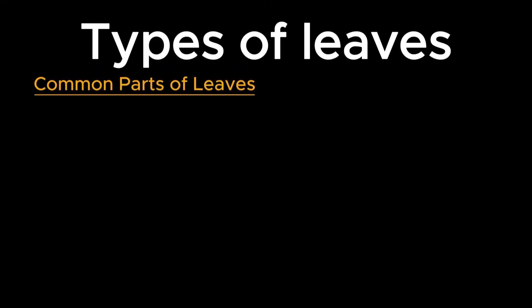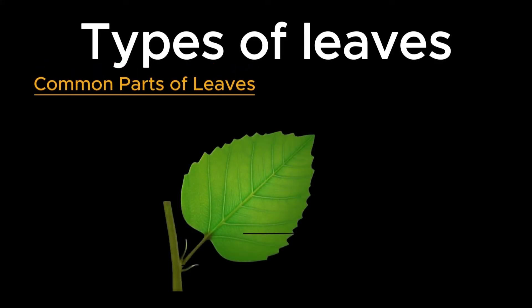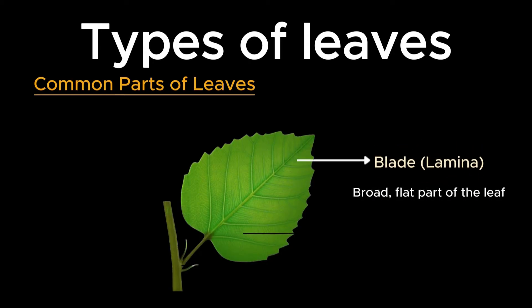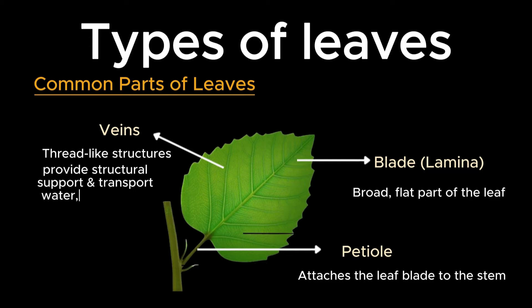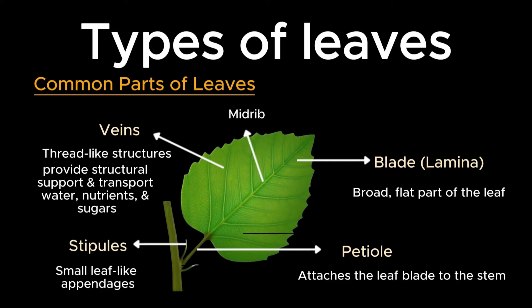Regardless of the differences, all leaves generally have the following parts. Blade or lamina is the broad, flat part of the leaf where photosynthesis occurs. The petiole is the stalk that attaches the leaf blade to the stem. Veins are thread-like structures in the leaves that provide structural support and transport water, nutrients, and sugars. The central vein is called the midrib. Stipules are the small leaf-like appendages at the base of the petiole, but they are not present in all leaves.